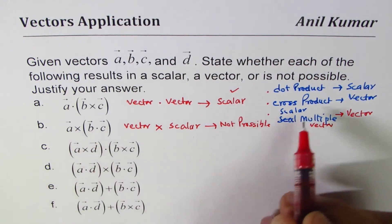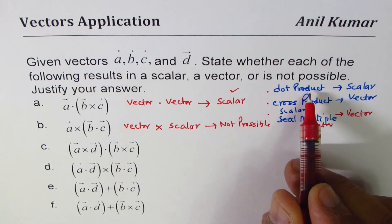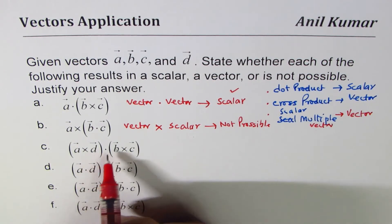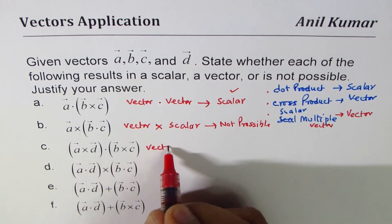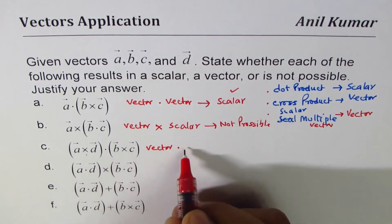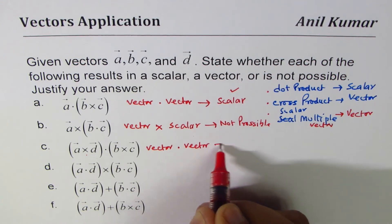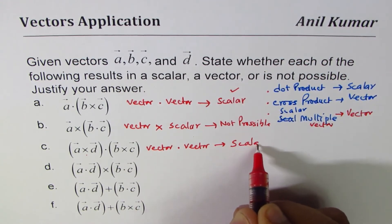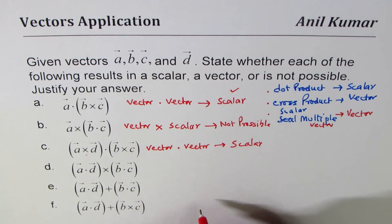Because cross products and dot products are between two vectors. Now this one, we have a vector because the cross product will be a vector, dot another vector, and that will be a scalar. Because dot product results in scalar. So I hope you understand the strategy.